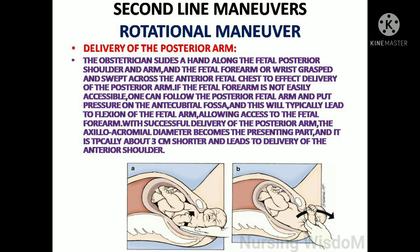The next maneuver is delivery of the posterior arm. The obstetrician slides a hand along the fetal posterior shoulder and arm, grasps the fetal forearm or wrist, and sweeps it across the anterior fetal chest to deliver the posterior arm. If the forearm is not easily accessible, pressure can be applied to the antecubital fossa, causing flexion of the arm to allow access to the forearm. With successful delivery of the posterior arm, the axilloacromial diameter becomes the presenting part, approximately 3 cm shorter, aiding delivery of the anterior shoulder.